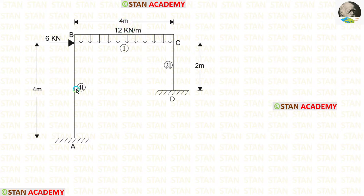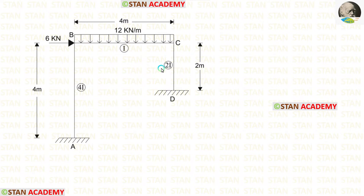The moment of inertia for column AB is 4i, for beam BC it is i, and for column CD it is 2i.